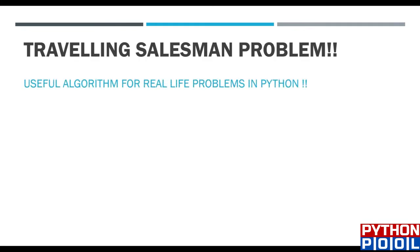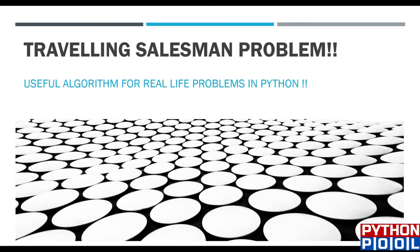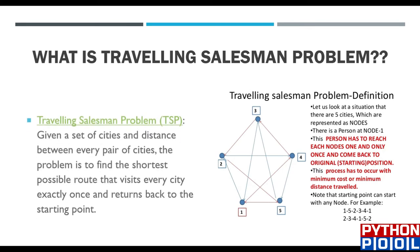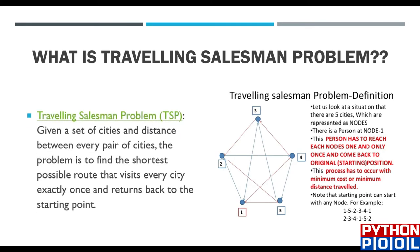Welcome to another video by Python Pool. In this video we're going to see the Traveling Salesman Problem. If you are a salesman and you need to move to four or five different points to deliver something, you would find the shortest path visiting all five points. That's what the Traveling Salesman Problem does — it finds the shortest path between specific coordinates.